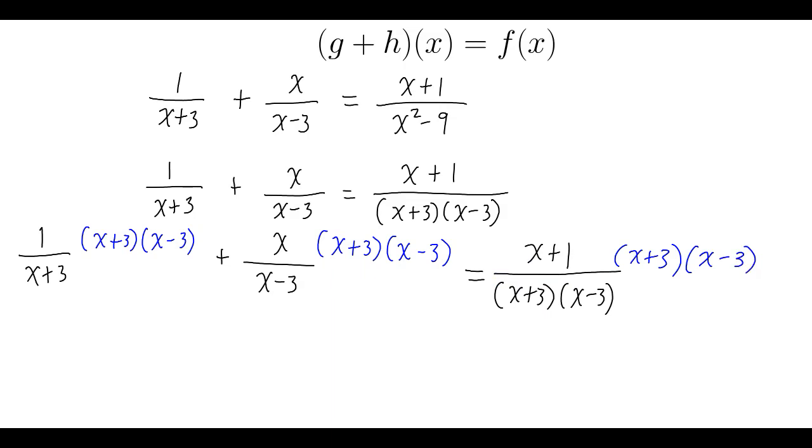So now we should have denominators canceling out all the way through. x plus 3 cancels on that first one to leave me with x minus 3, x minus 3 cancels, leaving me with x plus 1 on the right.